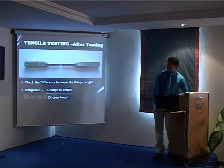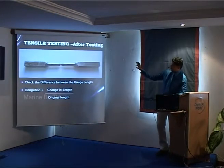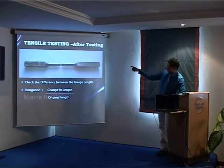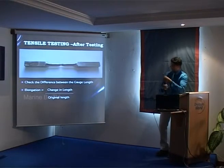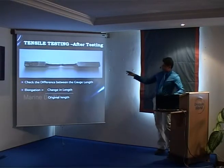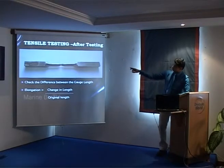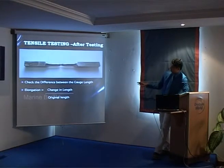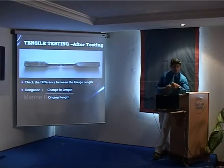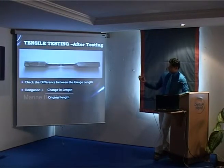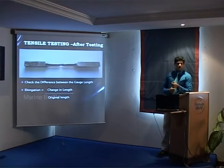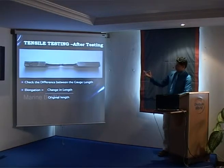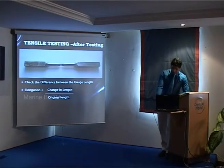The gauge length is very important. When you do the proper gauge marking and then perform the testing, once it gets elongated you can see a break in the structure. We calculate the change in length divided by the original length to get the percentage of elongation. That's how we identify how much the material can handle.